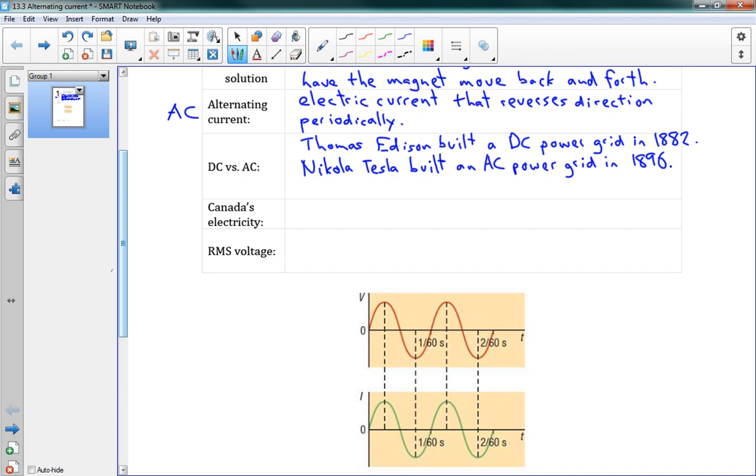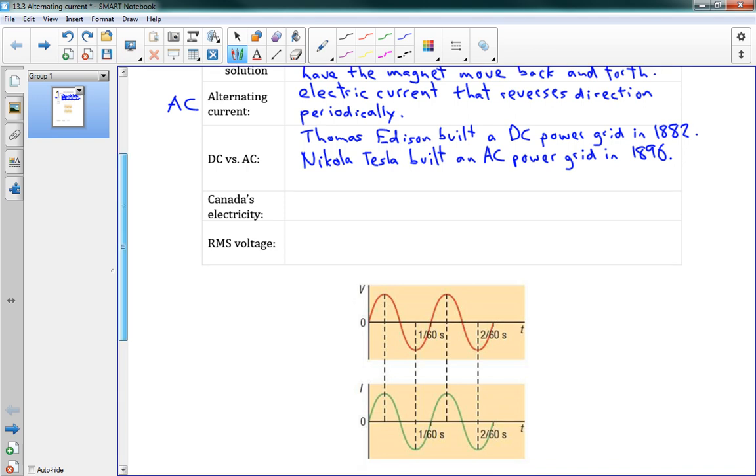Now, there was a bit of a turf war. Some people say DC is the best. Some people say AC is the best. Obviously, Thomas Edison had a lot of support. But in the end, AC won, because AC is just better.